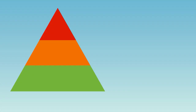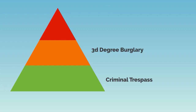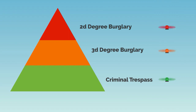For instance, let's say we have three crimes. The least serious crime is criminal trespass, a more serious crime is third-degree burglary, and the most serious of these three crimes is second-degree burglary. So keep in mind, the least serious crime is criminal trespass, and then we can work our way up to third- and then second-degree burglary.